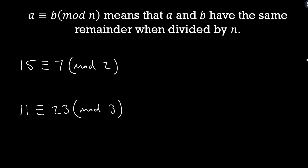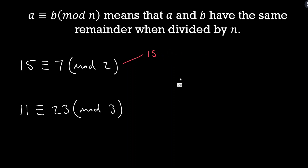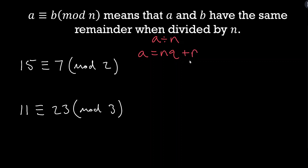There are ways we can write this out more formally. Going back to elementary school, one way we may have thought about division is: 2 goes into 15 seven times with a remainder of 1. We want to make that more precise using what's often referred to as the division algorithm. When I have a divided by n, I can write a equals n times q plus r, where q is the quotient and r is the remainder.